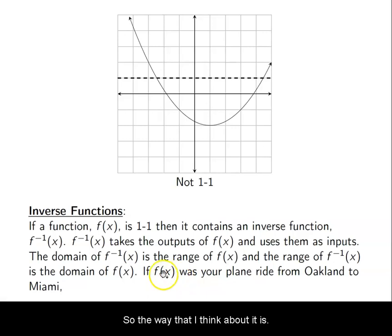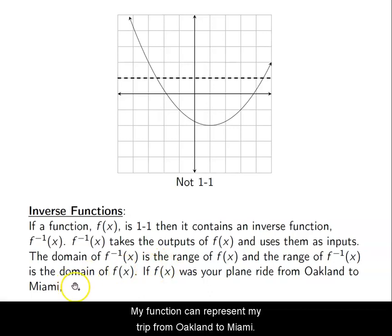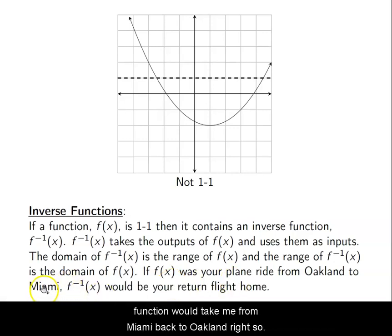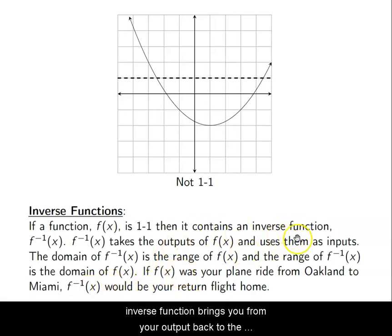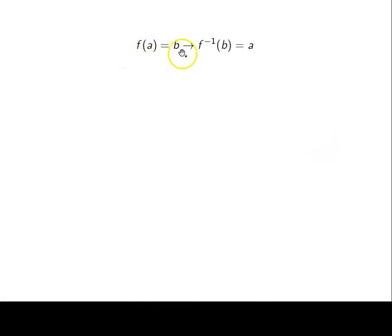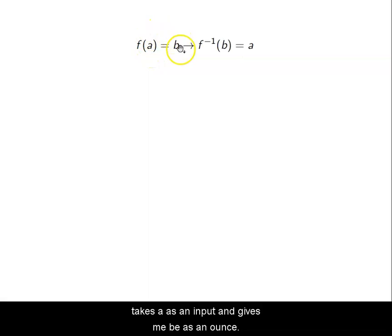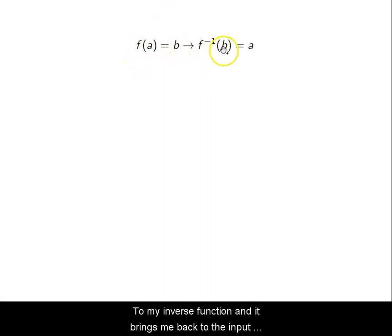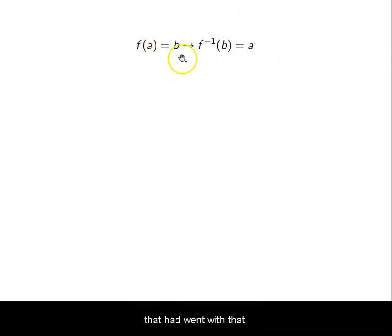The way I think about it: imagine you need to go from Oakland to Miami. Your function represents your trip from Oakland to Miami. Your inverse function is your return flight — it takes you from Miami back to Oakland. So your function takes you from input to output, and your inverse function brings you from the output back to the corresponding input. Algebraically, if f(a) = b, then f⁻¹(b) = a.